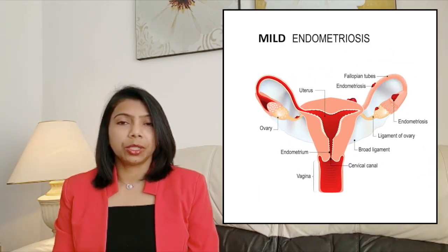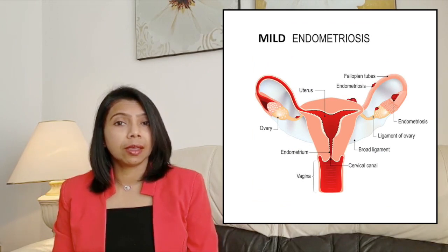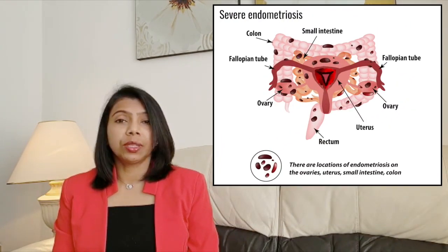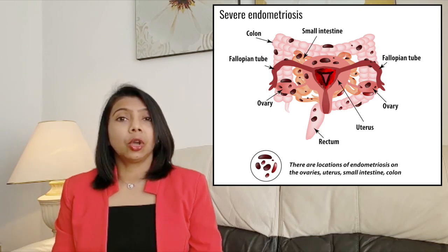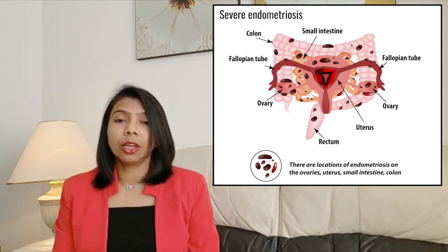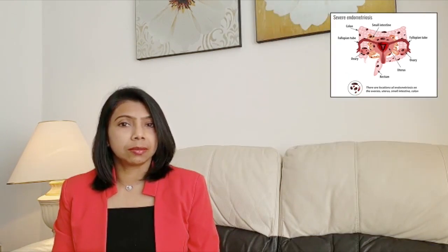Some women have endometriosis quite mild, with one or two spots here and there, while in others it can be quite severe, with extensive adhesions sticking all the organs — like bowels, bladder, uterus, tubes, ovaries — together, causing a frozen pelvis. The only way to diagnose endometriosis is by doing a laparoscopy, seeing the spots, and preferably taking a biopsy to confirm the diagnosis.